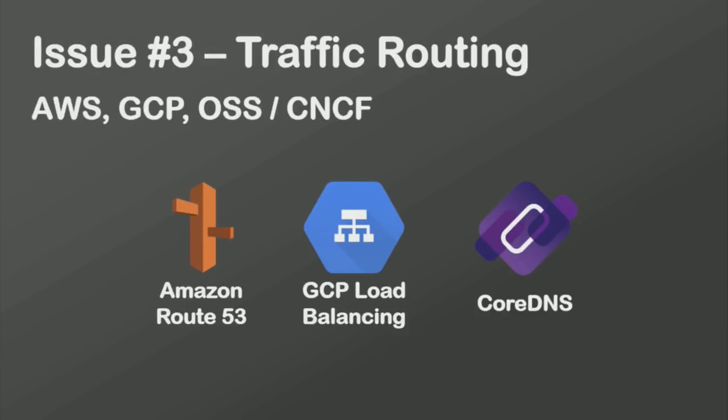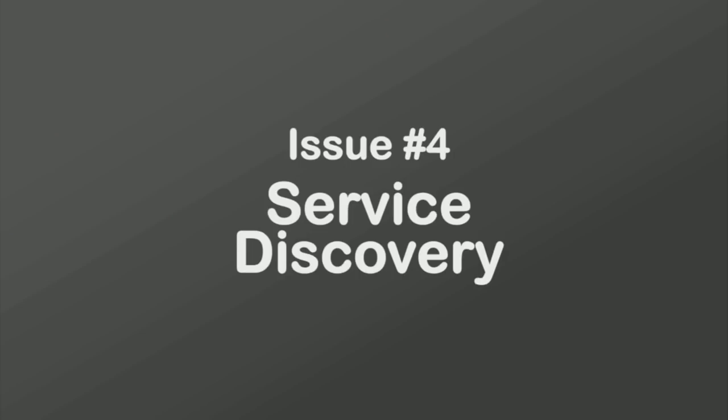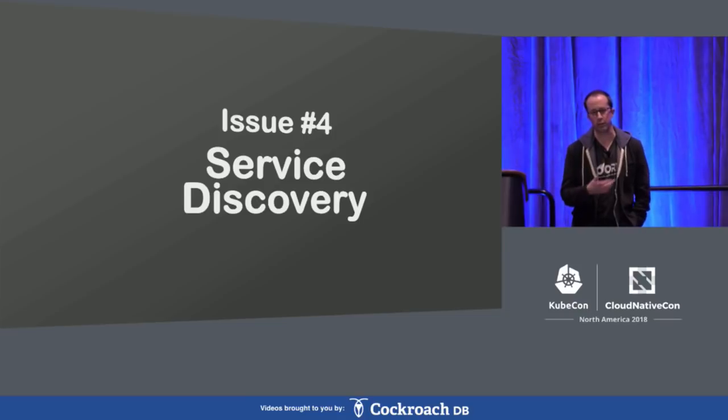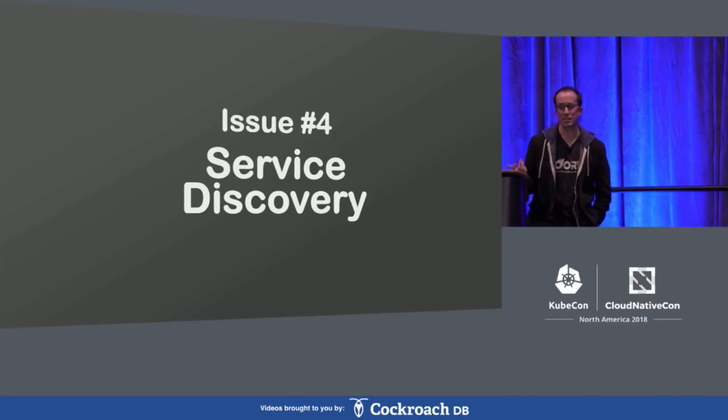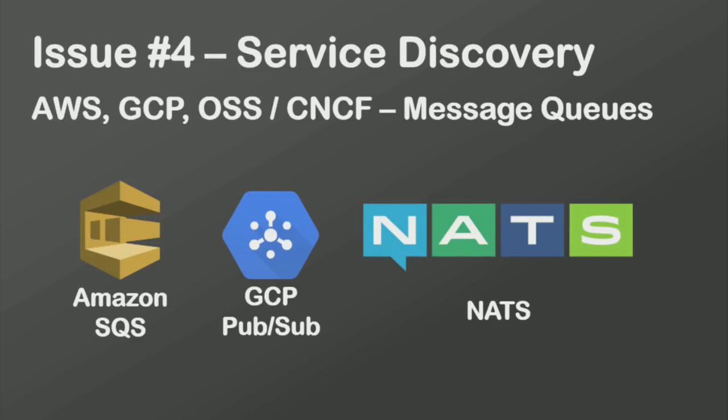Traffic routing remains a problem at ten clusters, and the solutions remain largely the same — you need a global load balancing solution. There are new issues we didn't face with two clusters: service discovery. Tools like Istio let you discover services within a cluster using Envoy. Multi-cluster Istio is coming, but does it exist fully today? Some in the cloud-native space posit that message queues are the right way to decouple applications, and you can use something like NATS to create a globally scalable decoupled message queue for pub-sub between microservices.